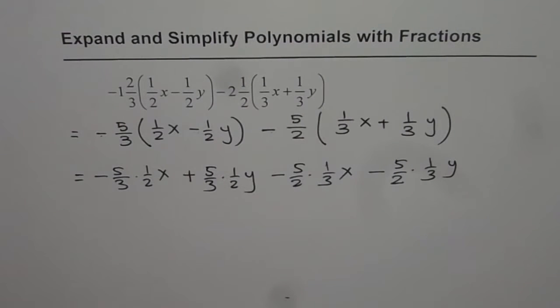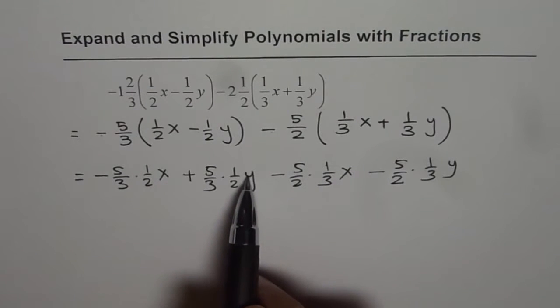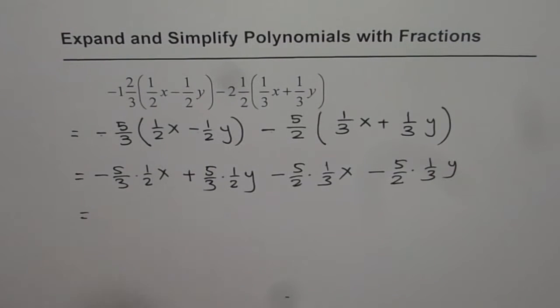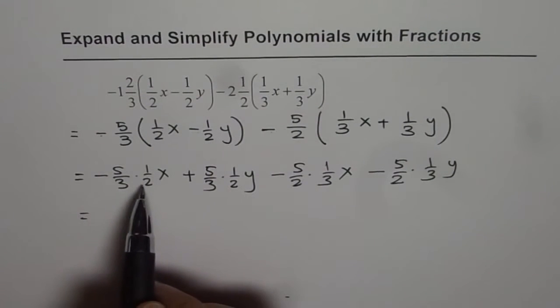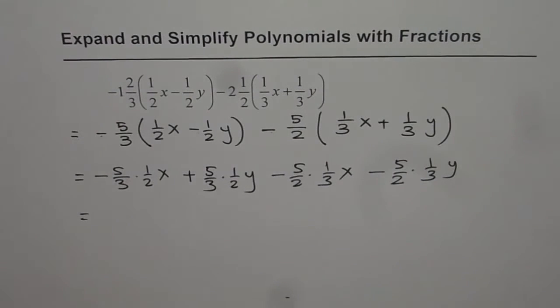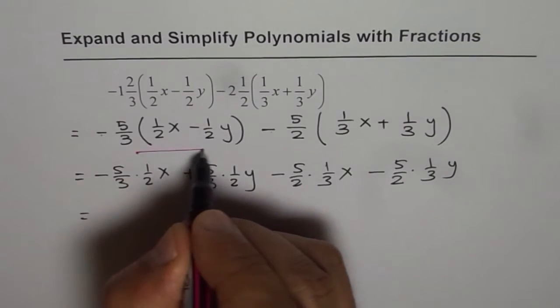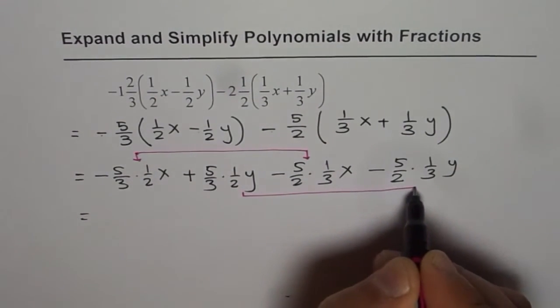Now we should combine the like terms. Like terms are the terms with x and these are the other two like terms with y. What we will do in this step is we will simplify this and combine the like terms. We will write them together and combine in the next step.